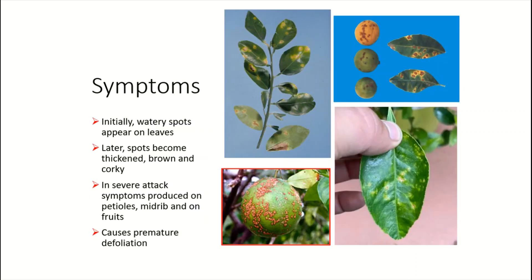What are the symptoms of citrus canker? Initially watery spots appear on the leaves. Later these spots become thickened, turn brown and corky. Mostly these spots have a yellow halo around them on the leaves, as you can see here.